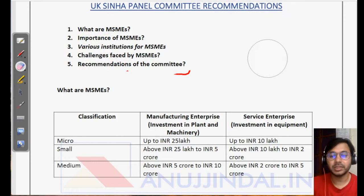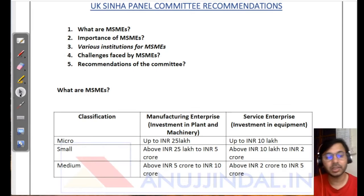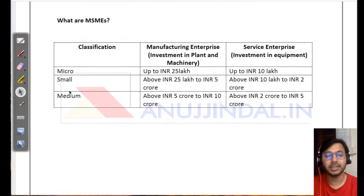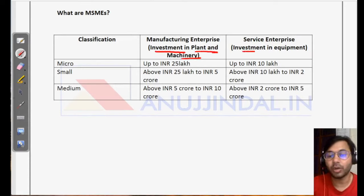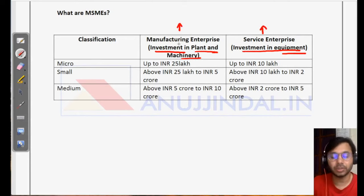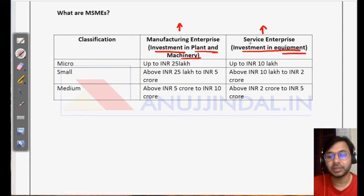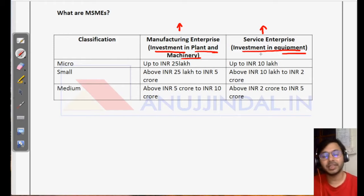The government identifies an enterprise as an MSME purely based on investment in plant and machinery, or investment in equipment, depending on whether the enterprise is a manufacturing enterprise or a service enterprise. If it is manufacturing, it is based on investment in plant and machinery; if it is a service enterprise, investment in equipment is used.